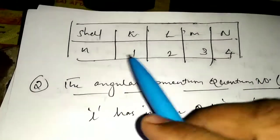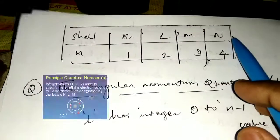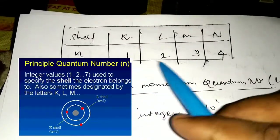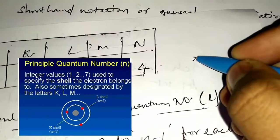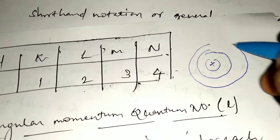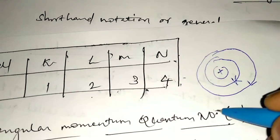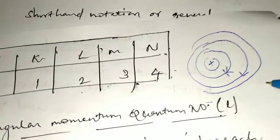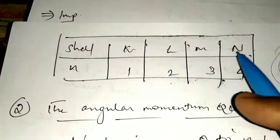This is a table you need to remember. Shells are also represented by the letters K, L, M, and N, with corresponding N values of 1, 2, 3, and 4. So you can say either K shell or N=1, L shell or N=2, and so on. The shells can be represented alphabetically as K, L, M, N, and so on.